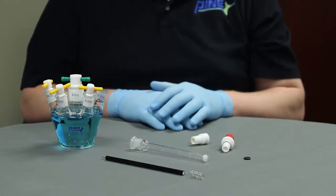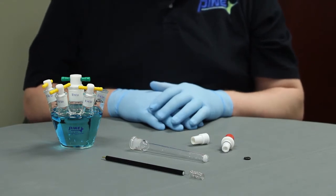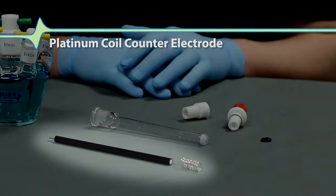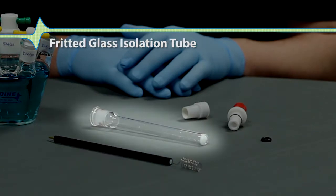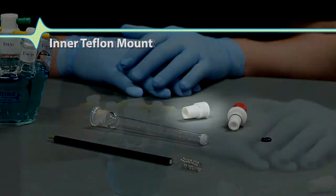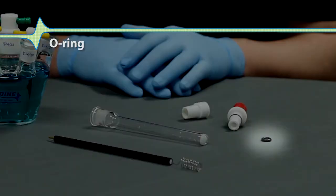The standard size platinum counter electrode consists of the following pieces: the platinum coil counter electrode, the fritted glass isolation tube, the inner Teflon mount, the outer Teflon mount, and an O-ring.